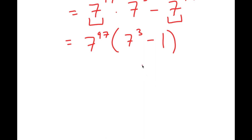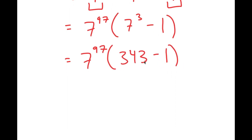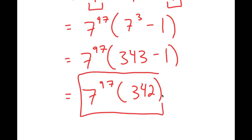And 7 to the power of 3 minus 1 — well, 7 to the power of 3 is 343. So I get 343 minus 1, which is equal to 342. So I get 7 to the power of 97 times 342, and this is my answer in simplest form.